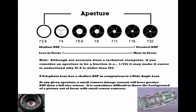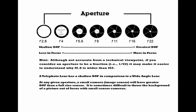Aperture starts at f2.8, with some lenses going as low as f1.4, and goes all the way up to f22. F2.8 is the widest opening; f22 is the smallest. People often ask why the larger number represents a smaller opening. If you think of these as fractions, 1/2.8 is a larger opening than 1/22 — that may help you remember. At f2.8, a lot of light enters and becomes very dispersed, giving you shallow depth of field. At f22, the beam of light is very sharp and focused, giving you great depth of field.